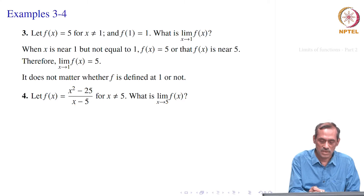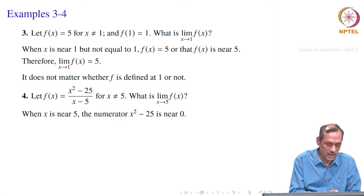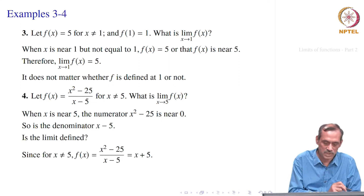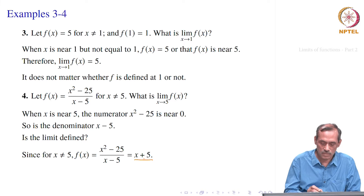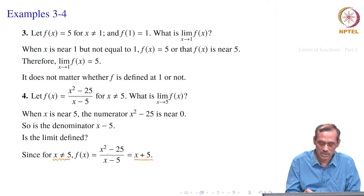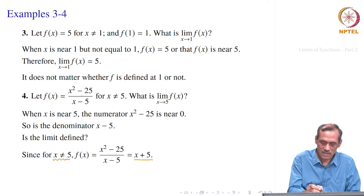When x is near 5, the denominator is near 0 but x is not equal to 5, so the denominator is never 0. That means you can really simplify this. You take (x squared minus 25) divided by (x minus 5) and write this as (x plus 5). Because x is not equal to 5 — that is what our definition requires — x remains near 5 but not equal to 5. So the function (x squared minus 25)/(x minus 5) is really (x plus 5). Because x is never equal to 5, you can always cancel.